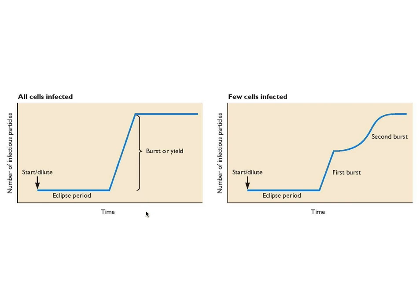Then the number of infectious particles would begin to rise, rose rather quickly, and plateaued. He called that the burst or yield — burst because it happened very quickly in bacteriophages, and it's a term that has stuck even though for many viruses the burst period is much longer. The virus infects the cells, makes the parts during the eclipse period, assembles new virions, and then you can detect infectivity.